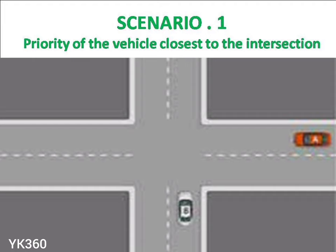Now let's see the first scenario: priority of the vehicle closest to the intersection. If two vehicles approach an intersection equally but not at the same time, the vehicle closest to the intersection has the right of priority. In the photo you can see two vehicles — vehicle A (red) and vehicle B (white) — approaching the intersection. The white vehicle has priority because it is closest to the junction.